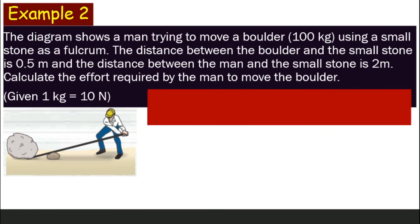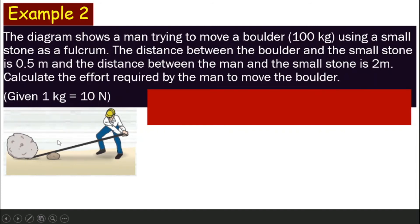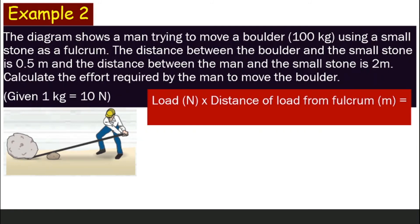Let's look at another example. A man is trying to move a large boulder weighing 100 kilograms using a small stone as a fulcrum. The boulder's distance from the fulcrum is 0.5 meters (the load), and the man's distance from the fulcrum is 2 meters (the effort). We want to calculate how much force — how much effort — the man needs to apply. Given: 1 kilogram = 10 newtons.